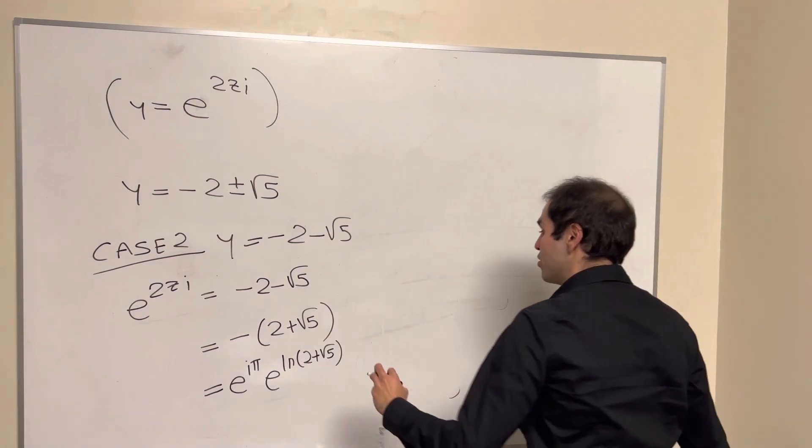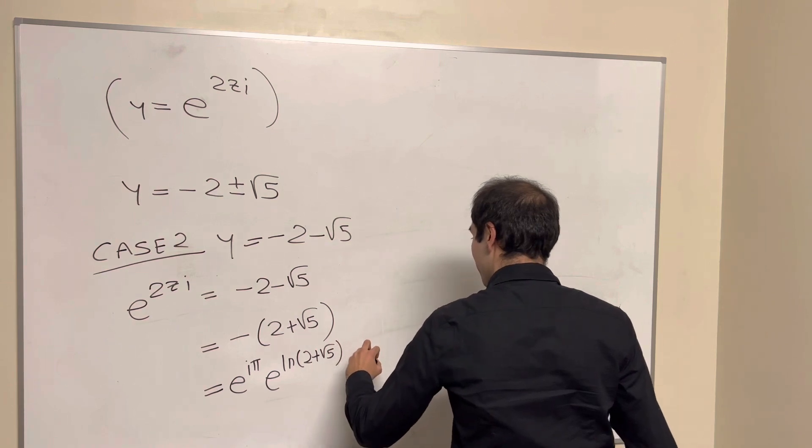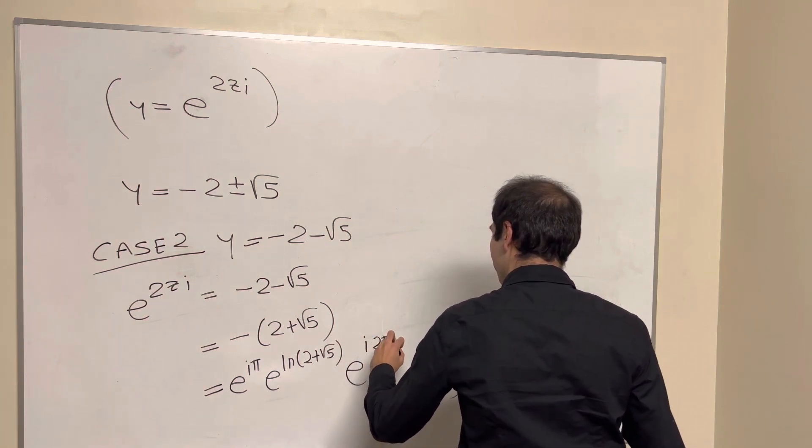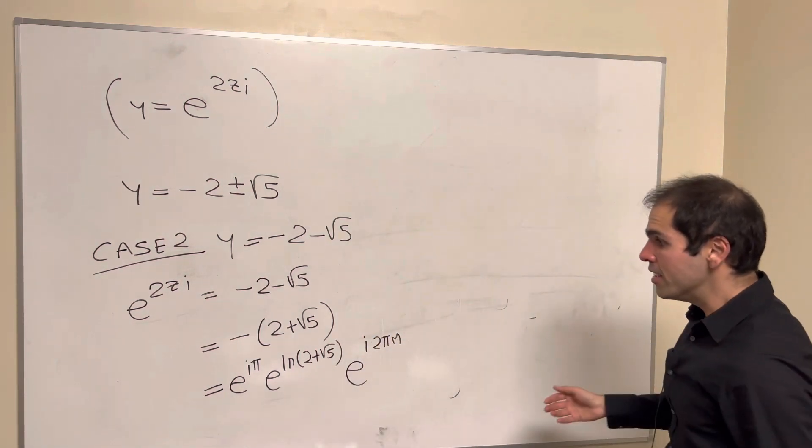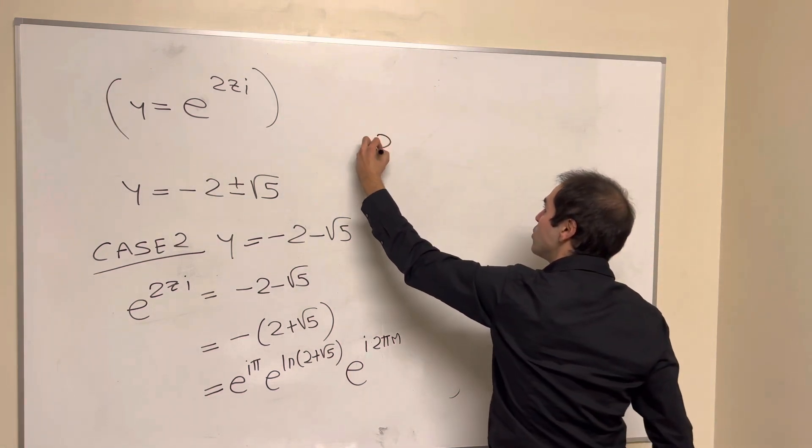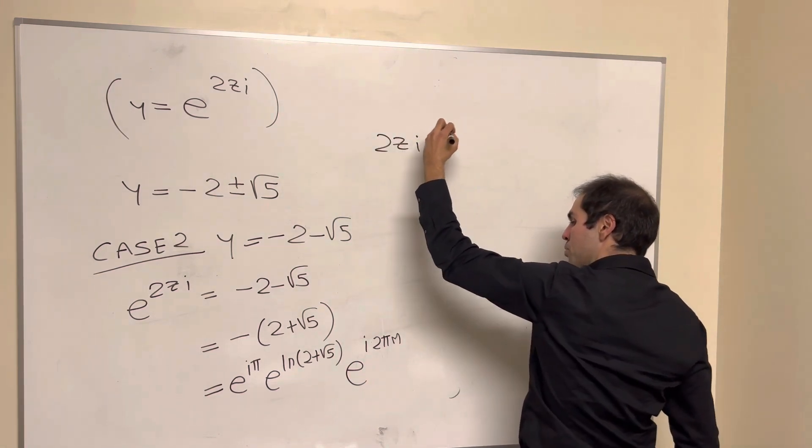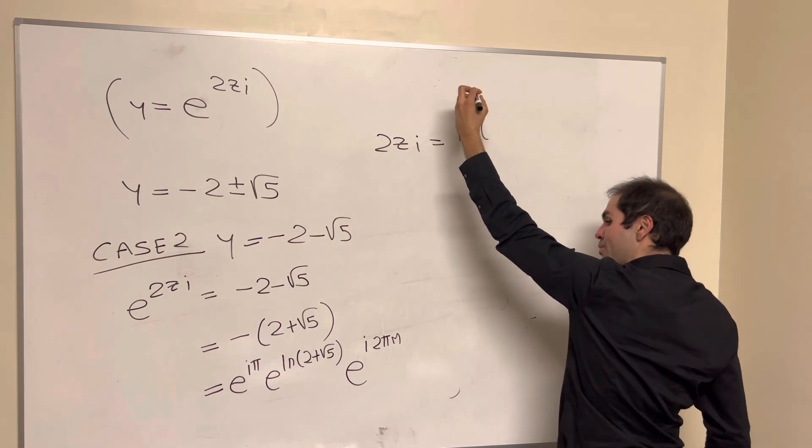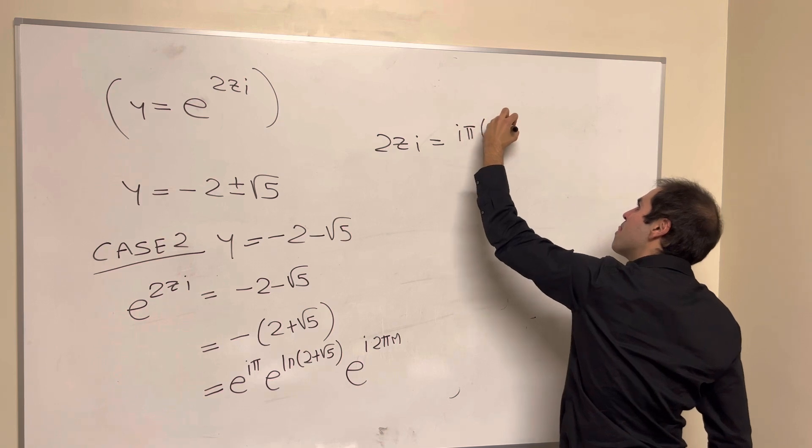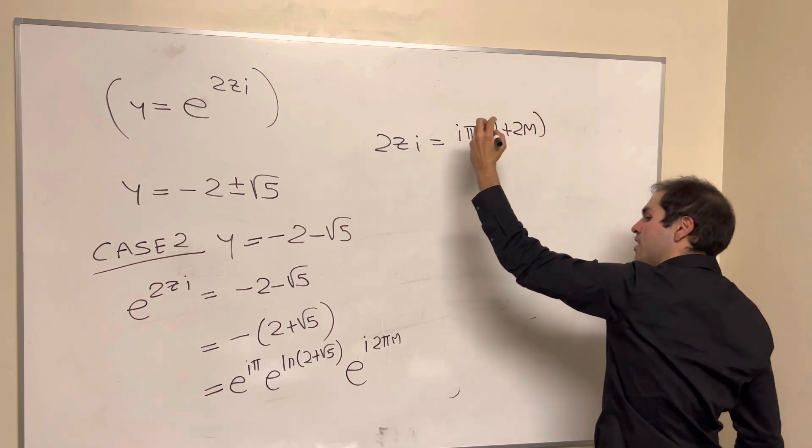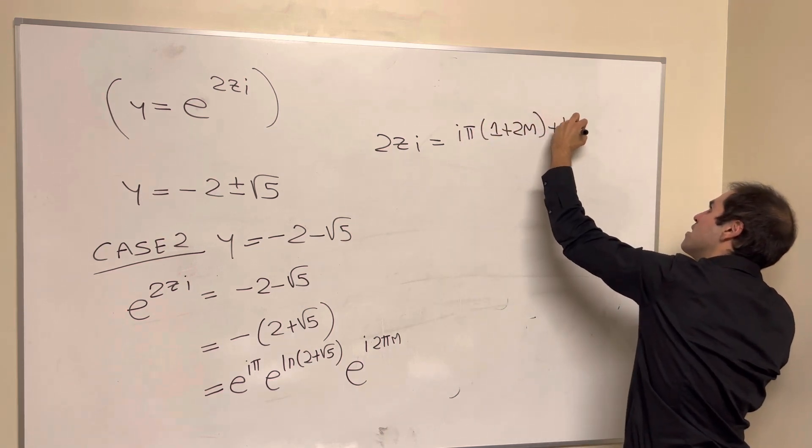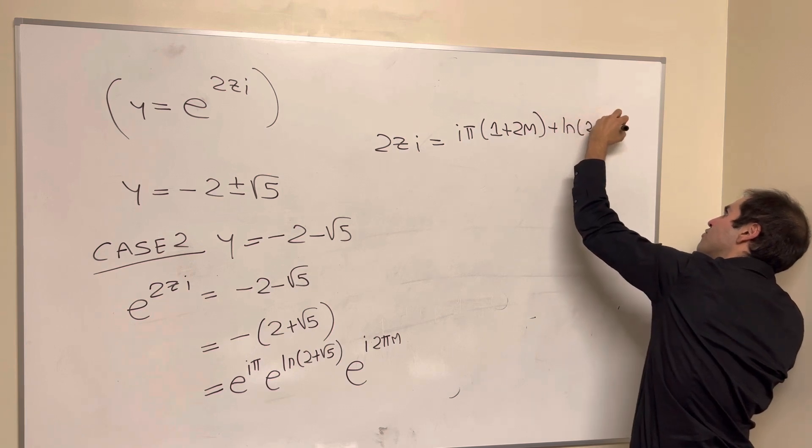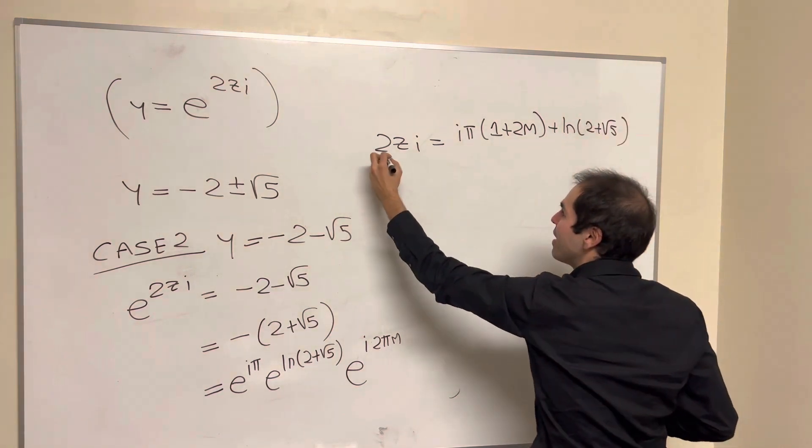And I get multiples of 2 pi, so e to the 2 pi mi. And the same thing here, so then we get 2zi equals i pi times 1 plus 2m, plus ln of 2 plus square root of 5, and then divide by 2i.